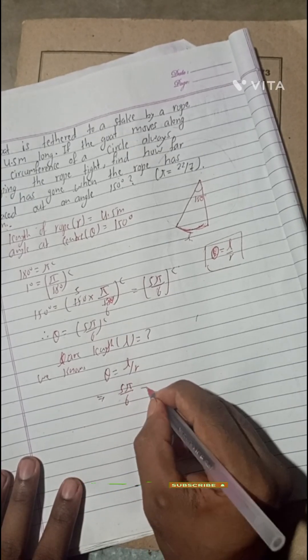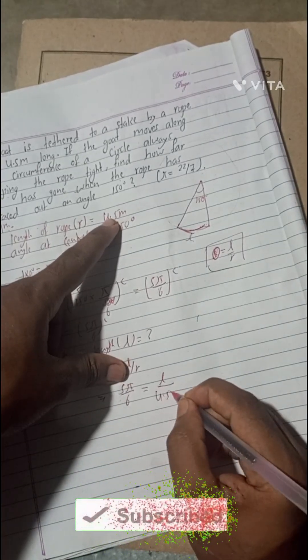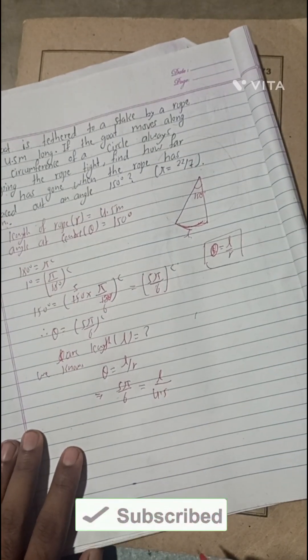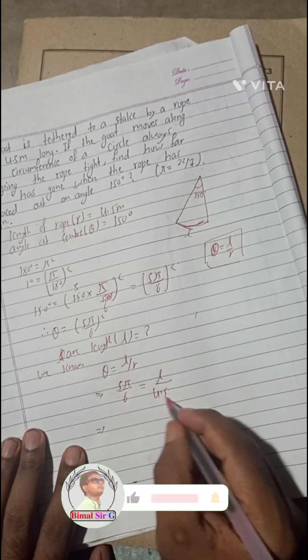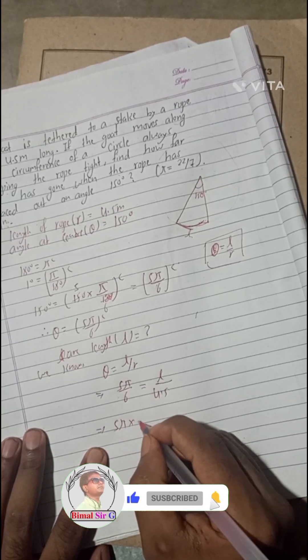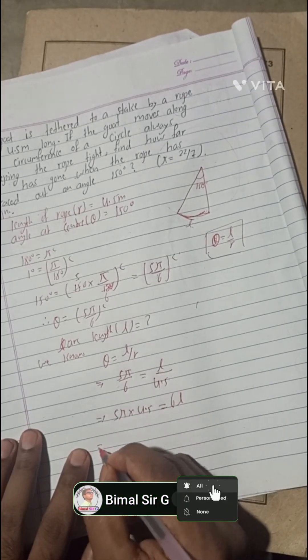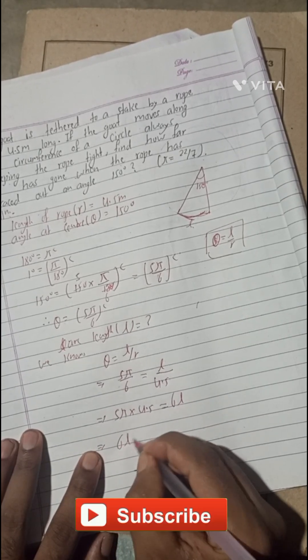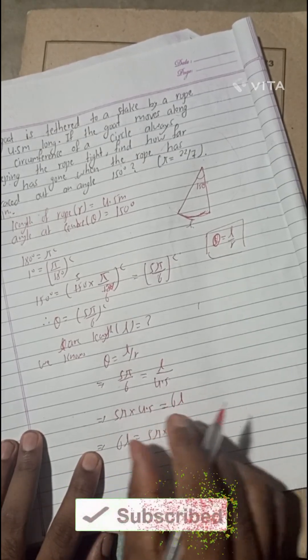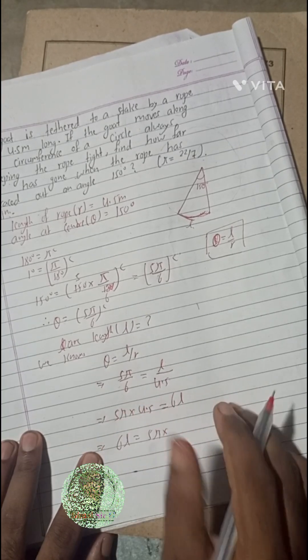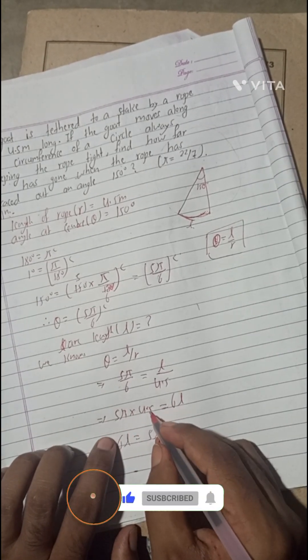We know theta is equal to L by R. That means theta value is given here: 5 pi by 6 equals L, we don't know L, and R is 4.5. Now when we cross multiply, this will be 5 pi into 4.5 equals 6L. This 6L will write this side, and this 5 pi into, we are just shifting left hand side to right hand side and right hand side to left side, so no need to change the sign.